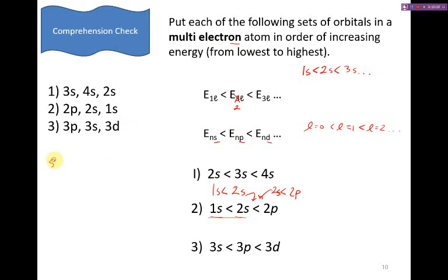If it were single, then we would have 1S, 2S, then the 2P, then the 3S, 3P, 3D, and then the 4S, etc. So this is if we had a single electron, this is for multi-electron.